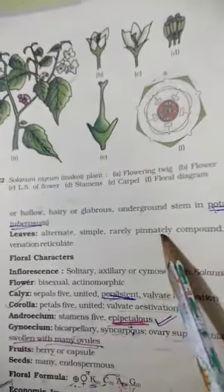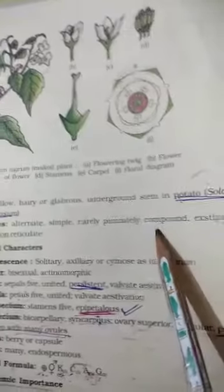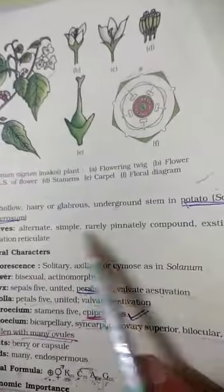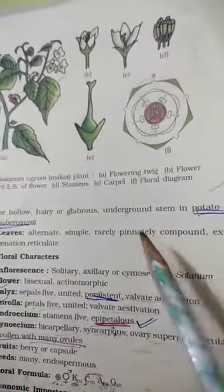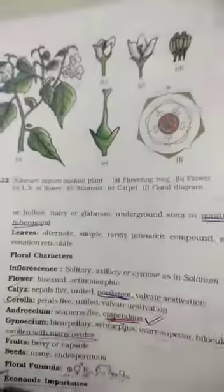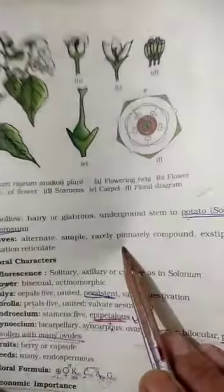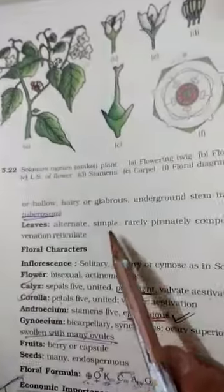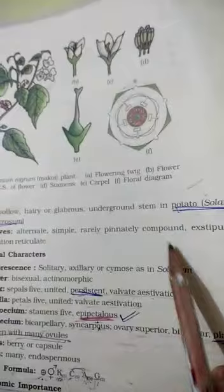Rarely pinnately compound, meaning compound leaves are very rare. Why are various things given? Because in one family various plants belong, so in some cases the exception can also be there. So leaves are simple, sometimes they can be pinnately compound but very rarely.